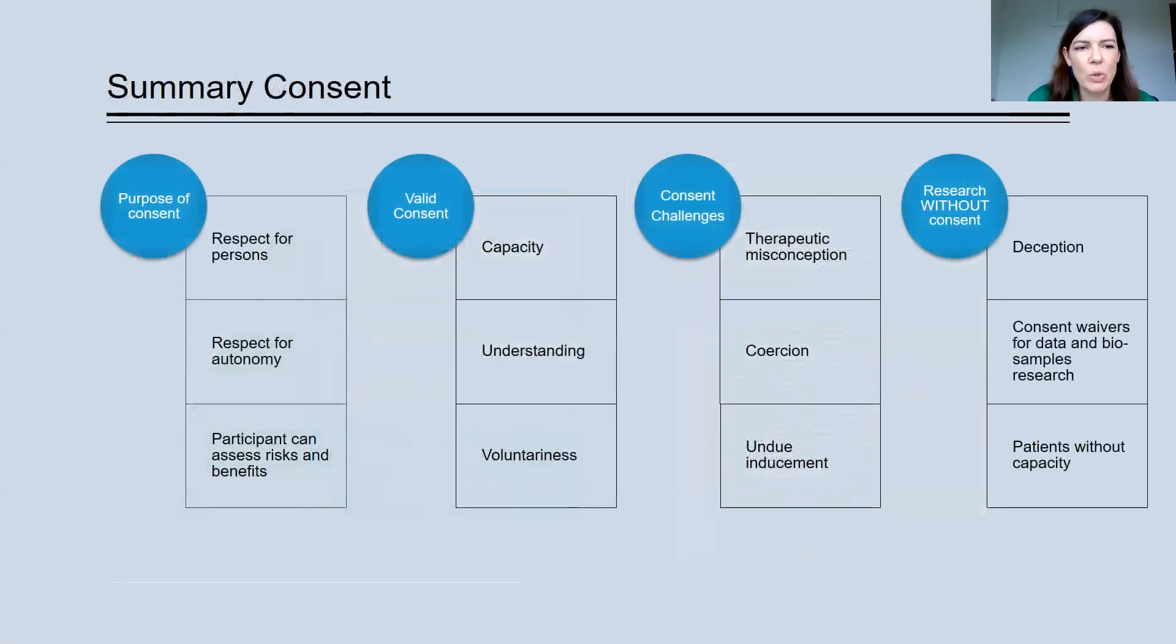So in summary, we've talked about the purpose of consent that's really focused on demonstrating respect for persons, respect for autonomy, and ensuring that participants have the opportunity to assess the risks and benefits of research themselves. We've talked about the requirements for valid consent, that's capacity, understanding and voluntariness.